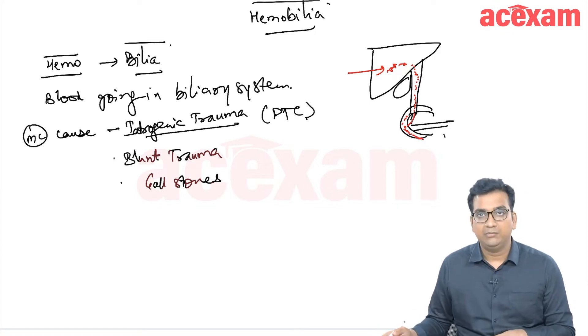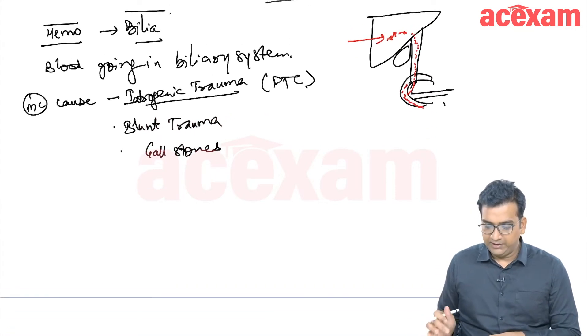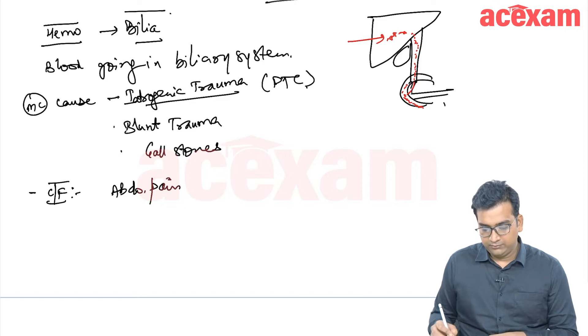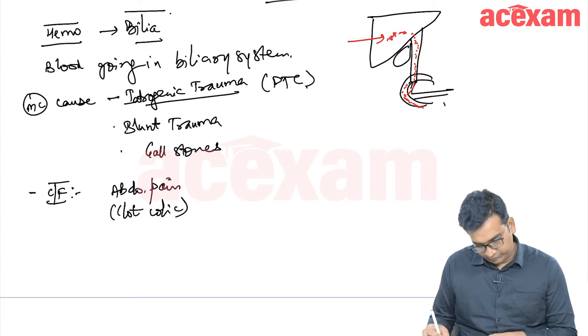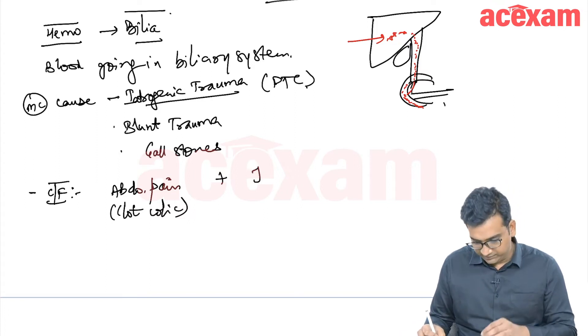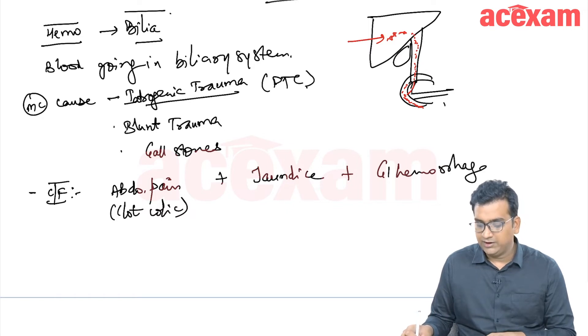The patient generally presents with GI bleed. What happens is patients present with abdominal pain, also known as clot colic or abdominal colics because of clot. And there can be development of jaundice due to these blood clots which are present in the biliary system. And there is presence of GI hemorrhage, which can be hematemesis or melena.